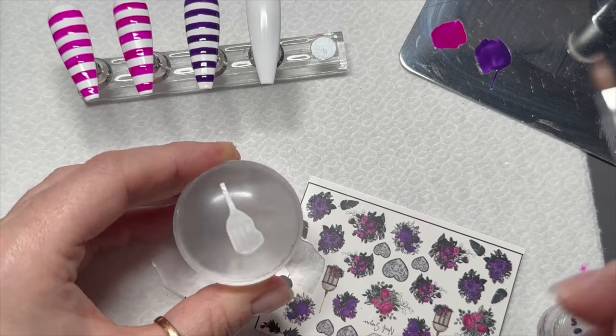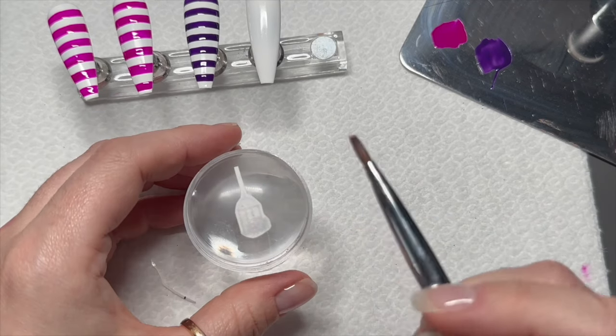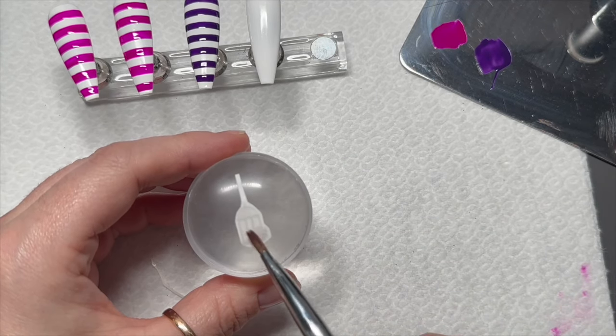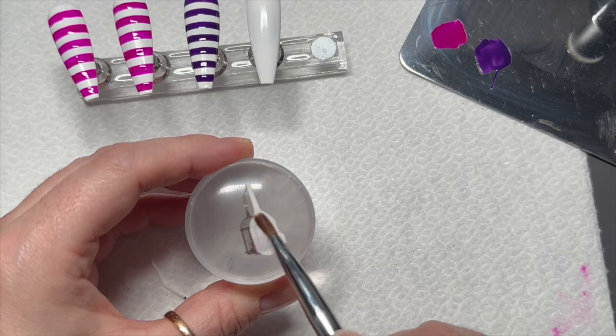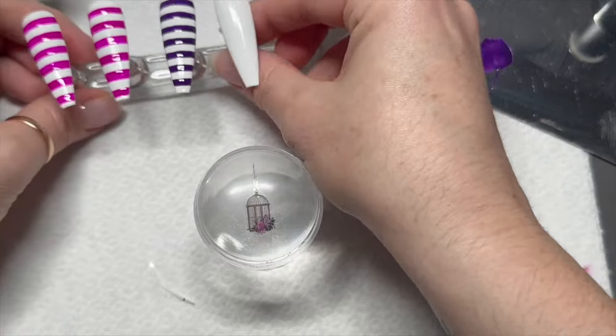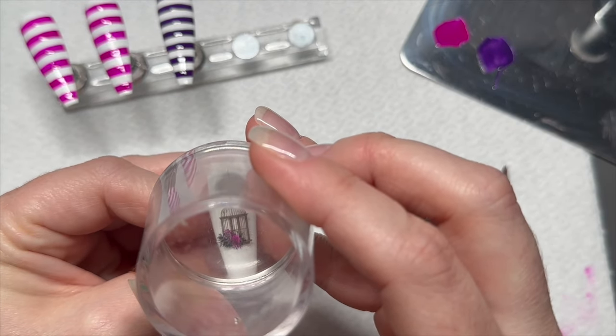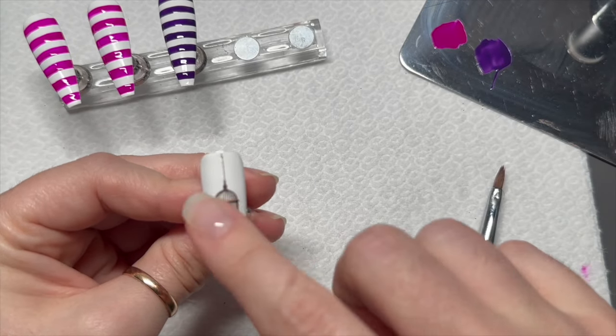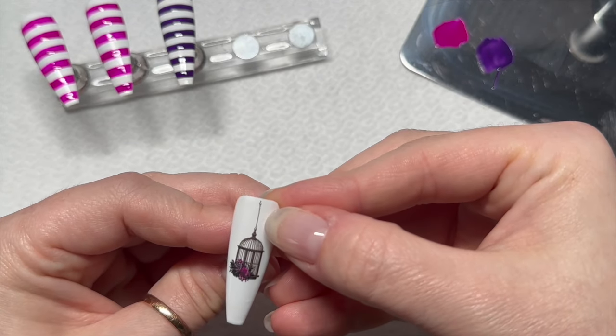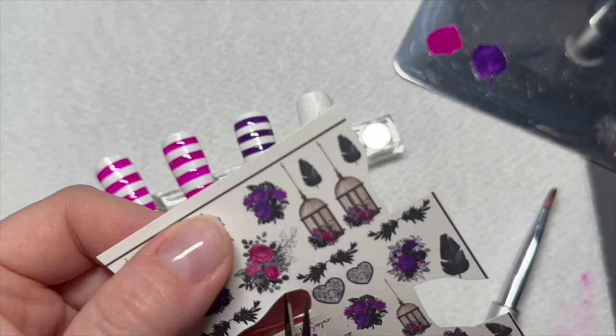You just put the decal on the stamper upside down, wet the back with some water, wait about 15 seconds maybe, and then the backing will just slide off. I dab it with my fingers to get off any excess water, and then the decal is just ready to stamp onto the nail. Look, instant nail art! I love these decals so much.